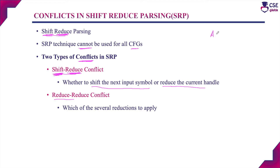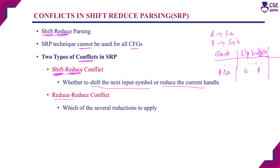For example, consider the grammar: A derives SA and B derives SAB. If the stack element is SA and the next element in the input buffer is B, the stack contains the handle SA, which can be reduced to A. Alternatively, if we shift the next input symbol B into the top of the stack, we get the handle SAB, which can be reduced to B. So the parser gets confused whether to shift the next input symbol or reduce the current handle — this conflict is called shift-reduce conflict.